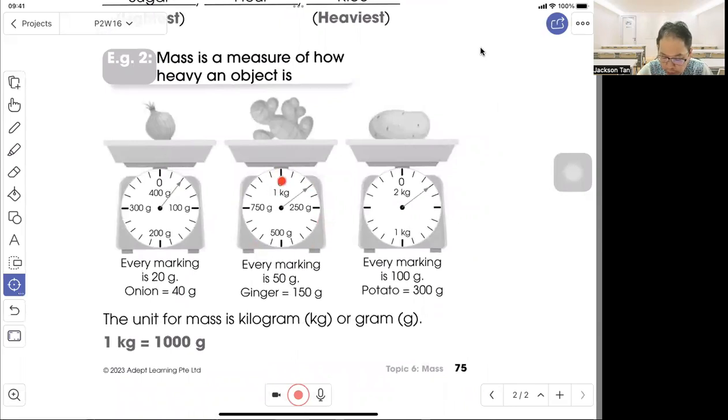Here is the reading scale from 0 to 250. So it's 50, 100, 150, 200, 250. Here is 150. Ginger is 150 grams.